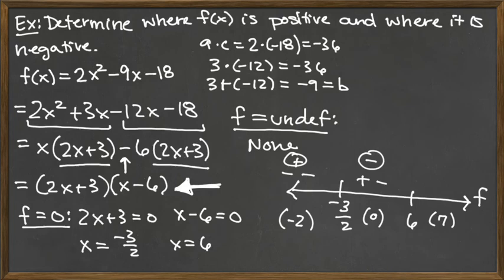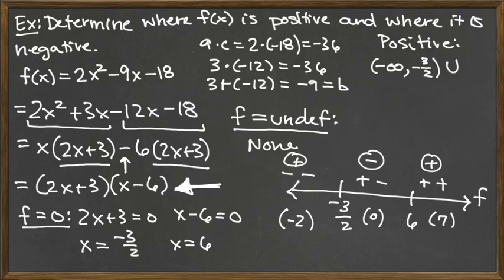As we move to the test value of 7, 2 times 7 plus 3 is positive. 7 minus 6 is positive. Positive times positive is positive. The circled signs are the signs for each interval. As our final conclusion, we've got positive for the interval negative infinity to negative 3 halves, and we pick back up at positive from 6 to infinity. Negative, we have just that middle interval from negative 3 halves to 6. Our final answer is given in interval notation.